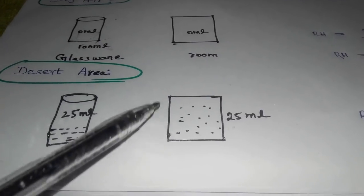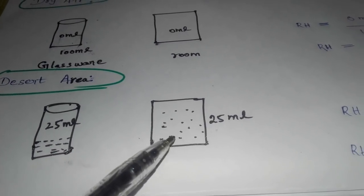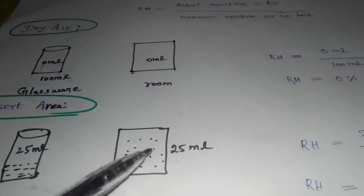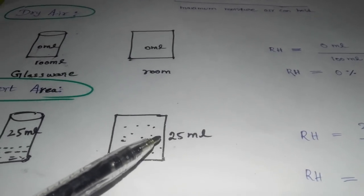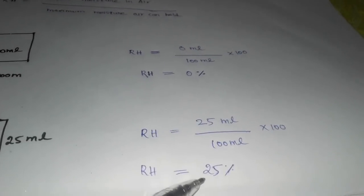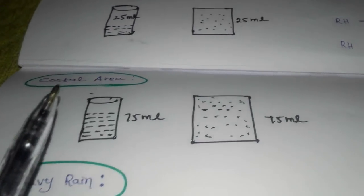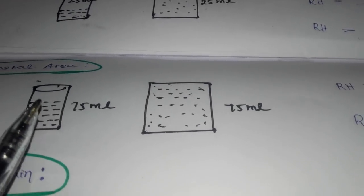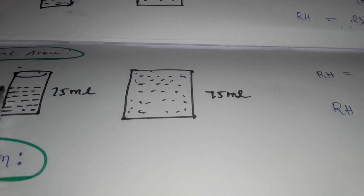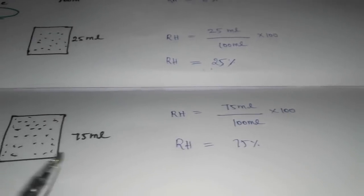We are talking about the room and the example of the room. In this room, we can absorb 100 ml water and 25 ml is absorbed currently. So that is actual moisture in air divided by maximum moisture in air can hold. In this room, we can absorb 75 ml in air and 25 ml is absorbed in the air.